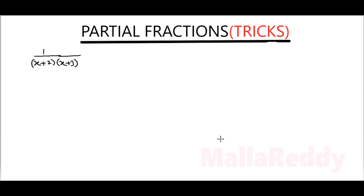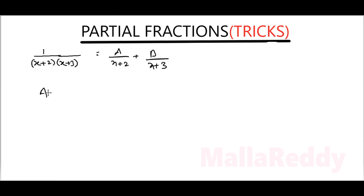Partial fractions: given 1 by (x+2) into (x+3), the partial fractions of this problem is written as A by (x+2) plus B by (x+3). Now first we find the value of A.